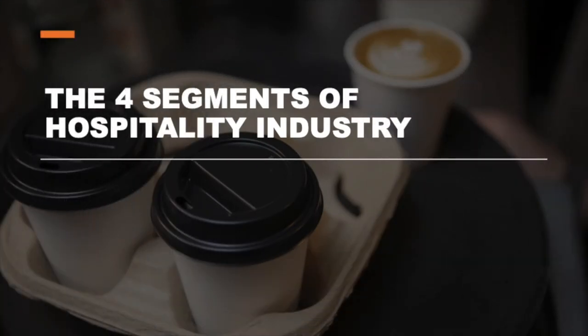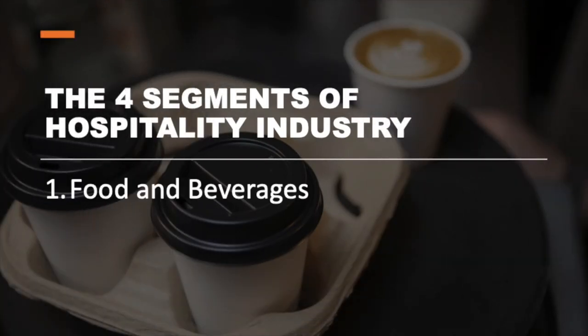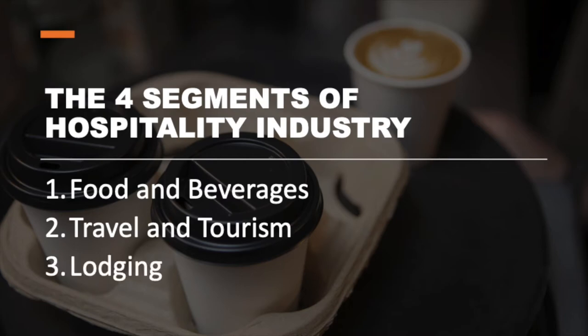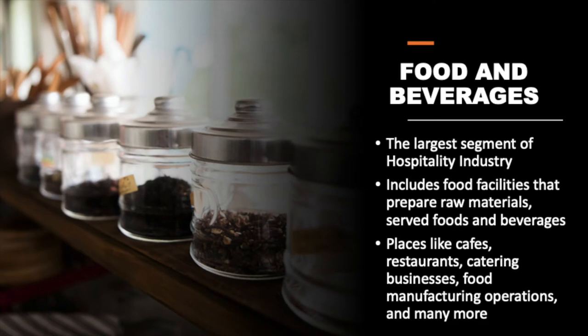The hospitality industry has four segments, which are food and beverages, travel and tourism, lodging, and recreation. First, food and beverages is the largest segment of the hospitality industry. It includes food facilities that prepare raw materials, served foods, and beverages in such places like cafes, restaurants, catering businesses, food manufacturing operations, and many more.